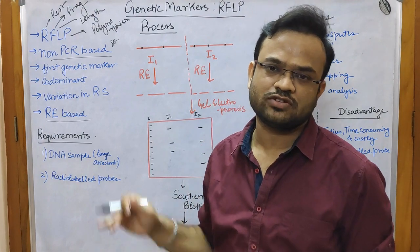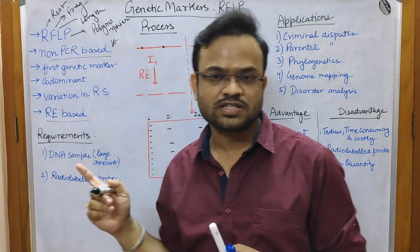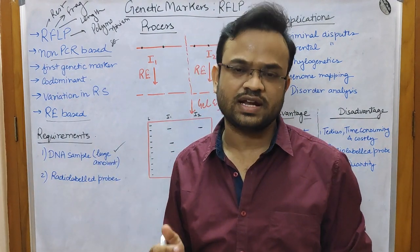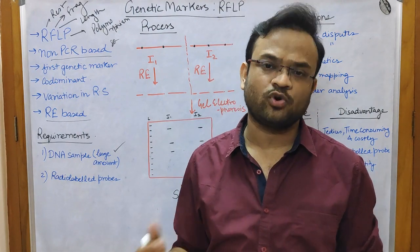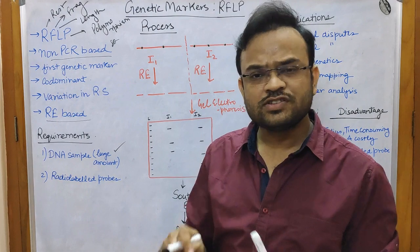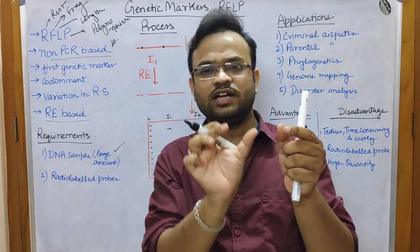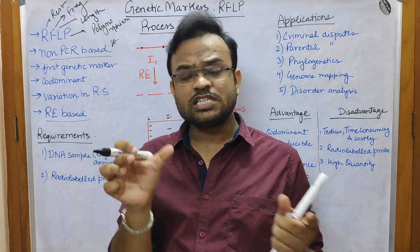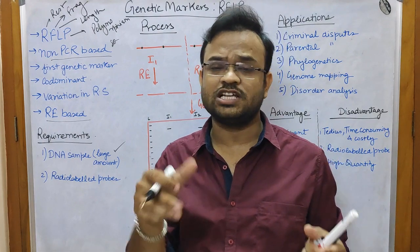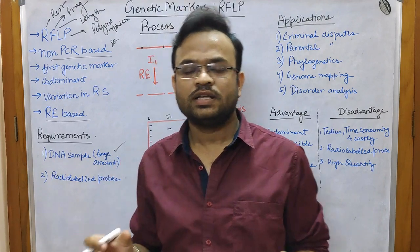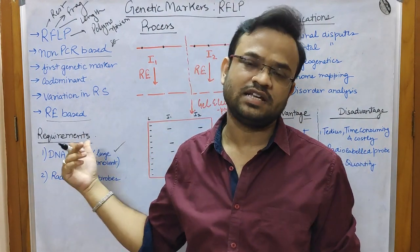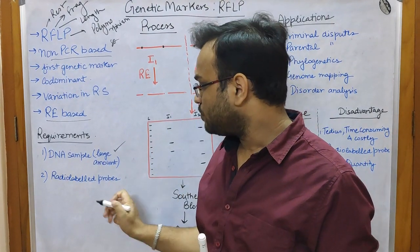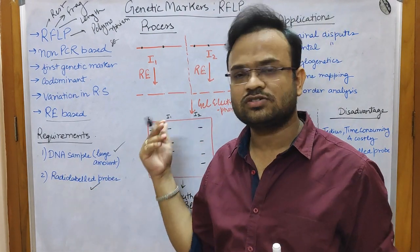The requirements for this experiment are: first, a DNA sample — this DNA sample will be cut using restriction enzymes. Second, a radio-labeled probe. Once the restriction enzyme cuts the DNA, you get different strands, and you need a probe to identify whether a particular strand is present. The probe hybridizes with the DNA strand and reports whether that particular DNA strand is present.